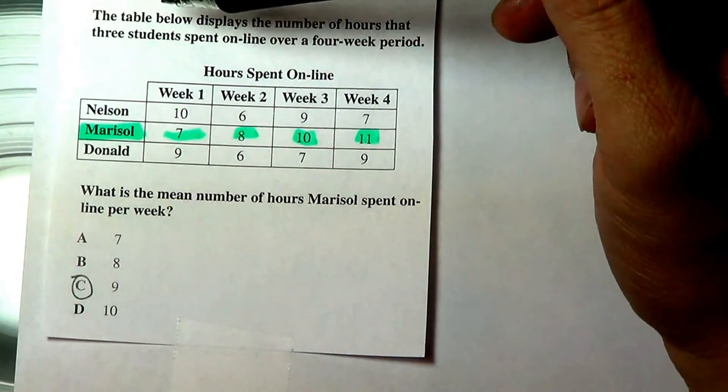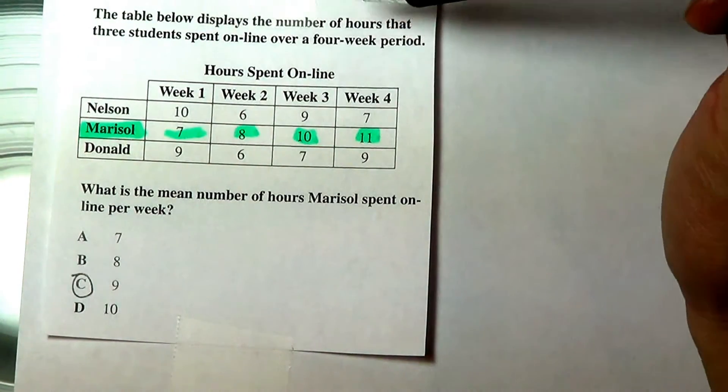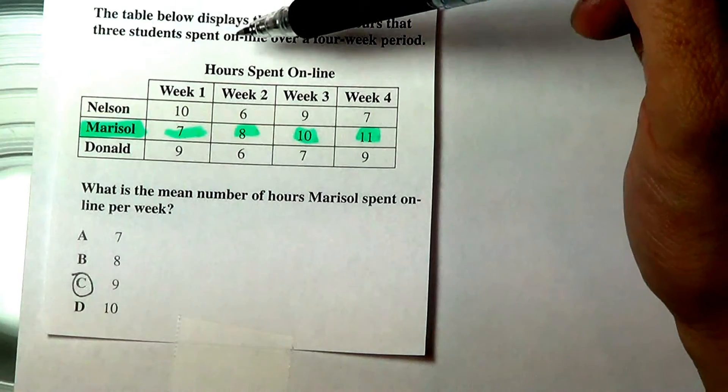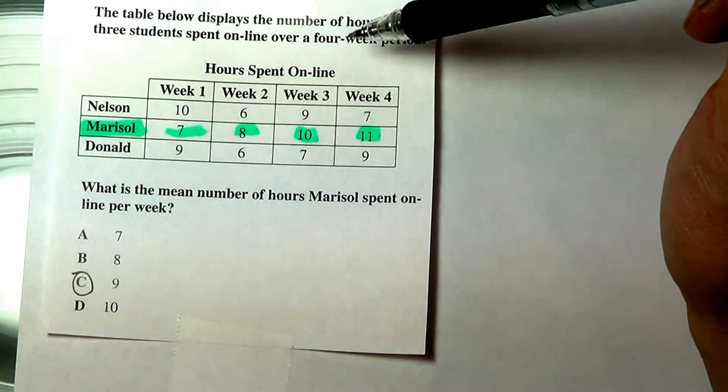If you look at the directions, it says the table below displays the number of hours that three students spent online over a four-week period.